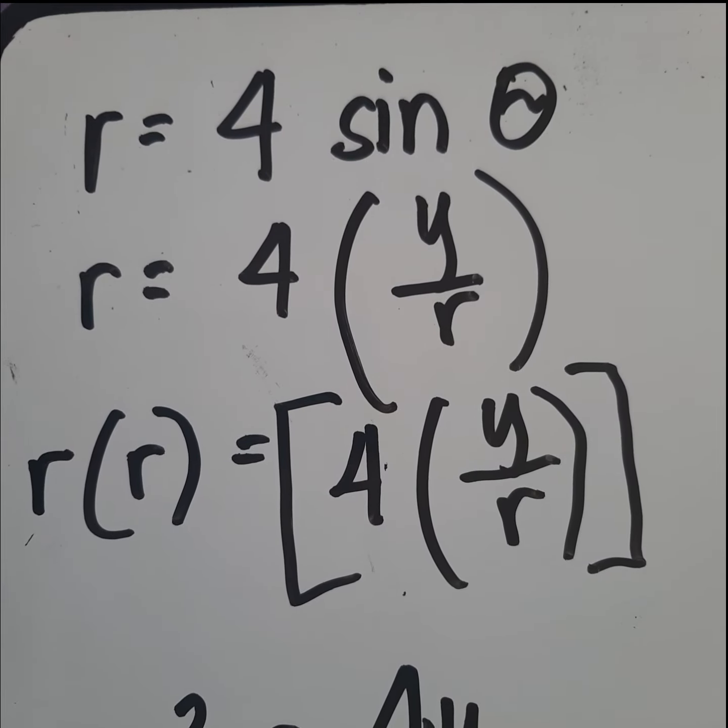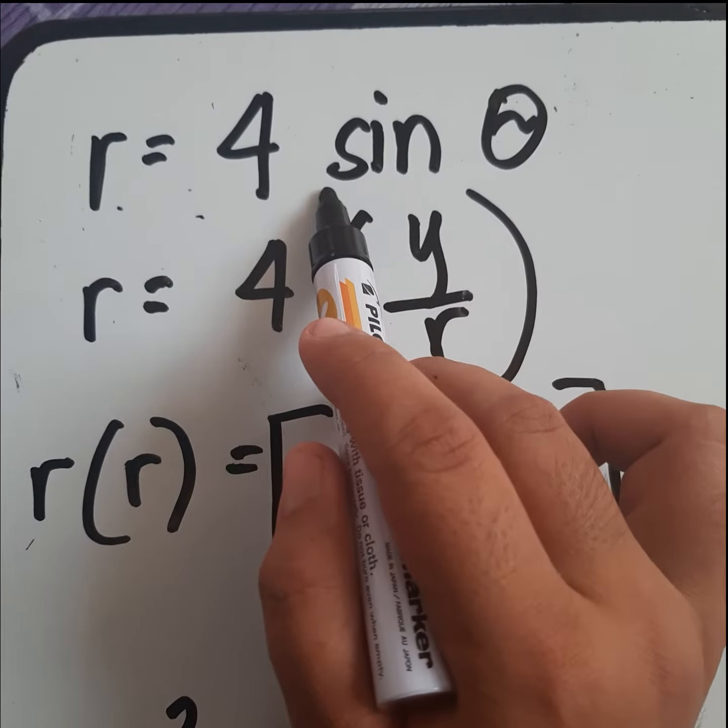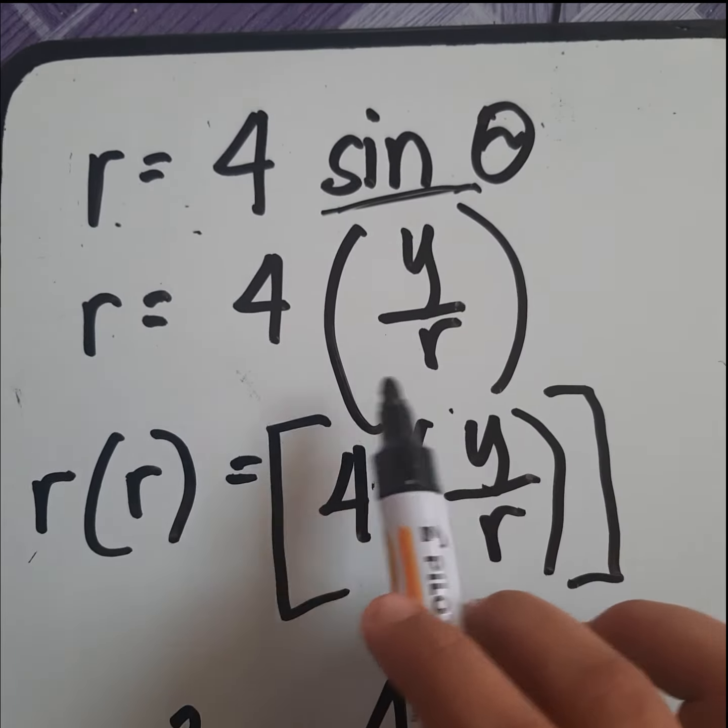So now let's have an example. r is equal to 4 sine theta. We need to substitute sine theta into y over r.